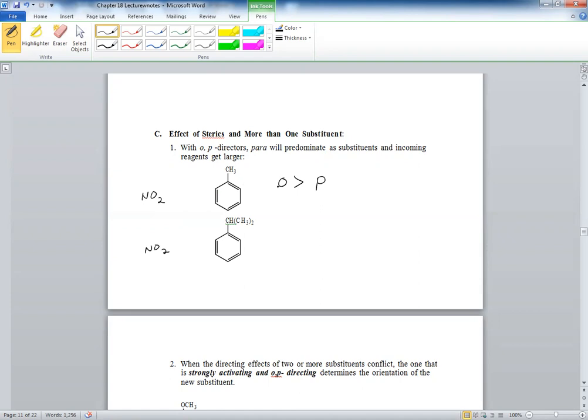Because you have more ortho positions. This is the ortho, that's the ortho, and that's the para. However, look how this is a larger substituent. Then the para would actually have a larger percentage, or it would predominate the para position. And that's due to sterics.